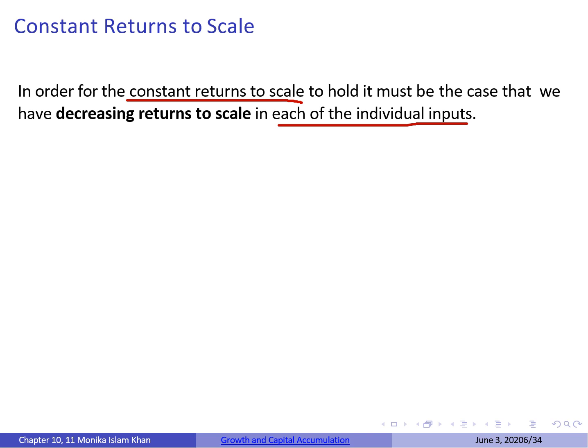So say you keep labour input unchanged and increase capital by 2 units. Your output will still increase, but at a decreasing rate — say output only increases by 1 unit. This is what we mean by decreasing returns to scale in each of the individual inputs.